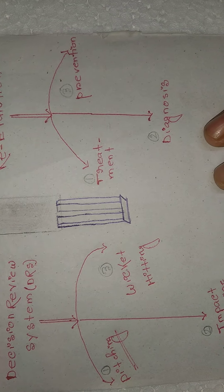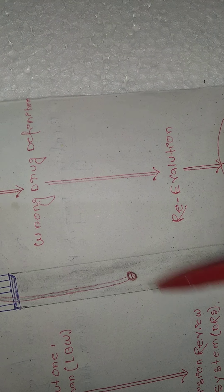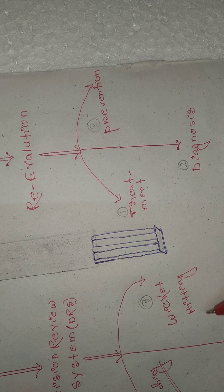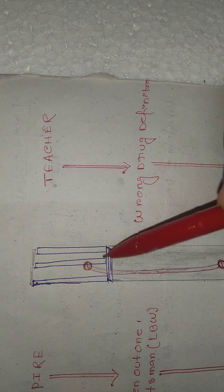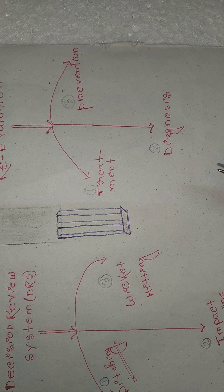The second thing the umpire will see is impact in line — whether the ball is impacting in line or not. The third and most important thing is whether the ball is hitting the wicket or not. If the ball is hitting the wicket, then the umpire will confirm that it is out.